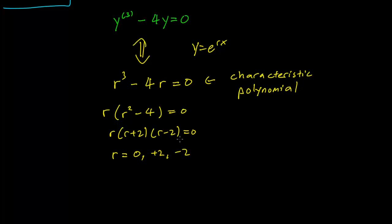And we then can write y = c₁e^(0x) + c₂e^(2x) + c₃e^(-2x). In other words, c₁ + c₂e^(2x) + c₃e^(-2x). And this is going to be our general solution.